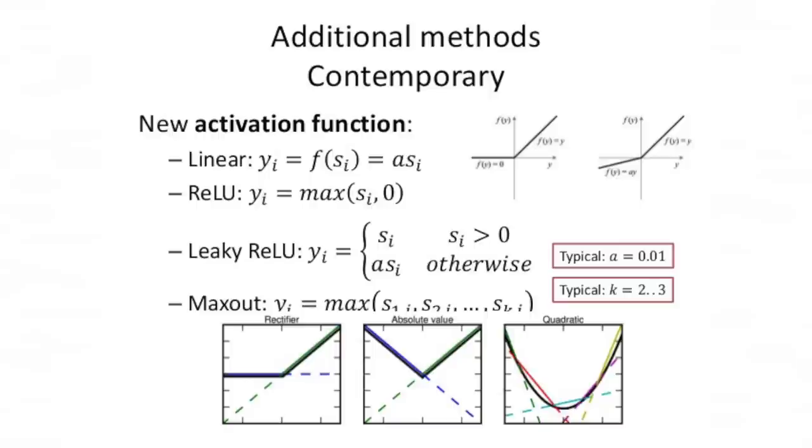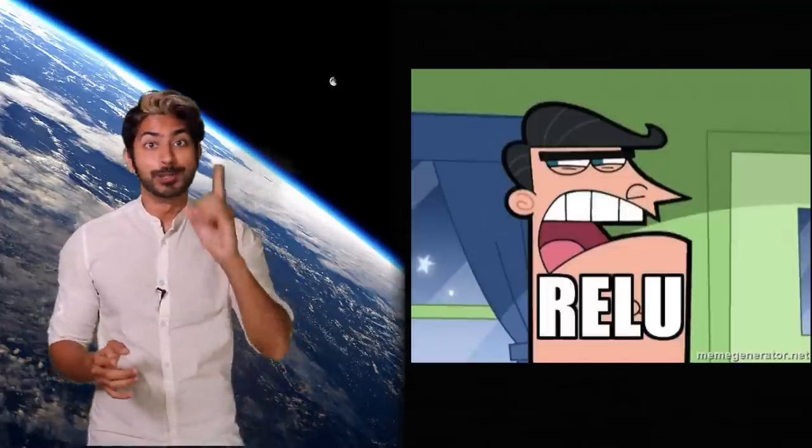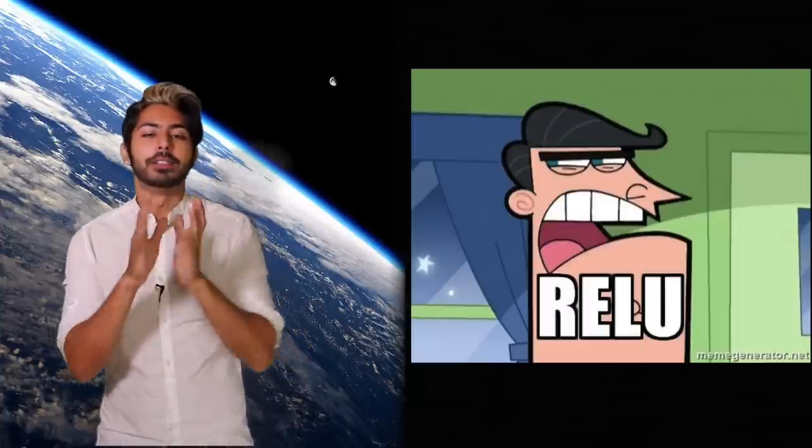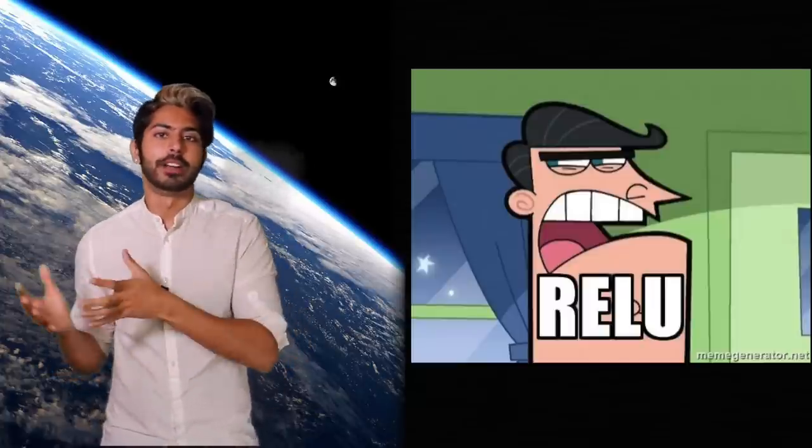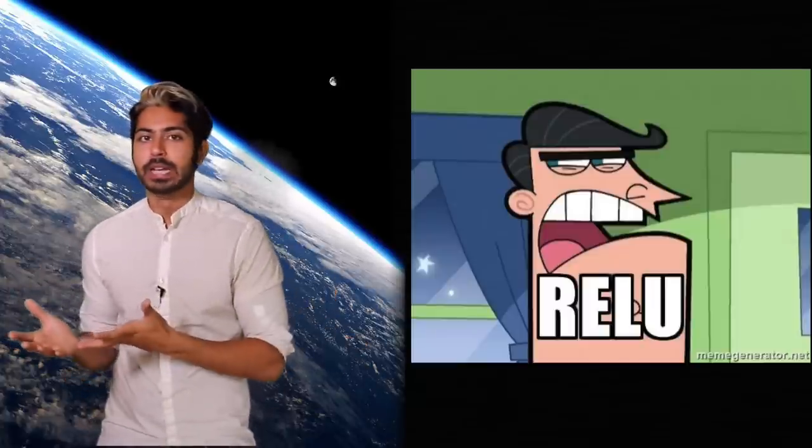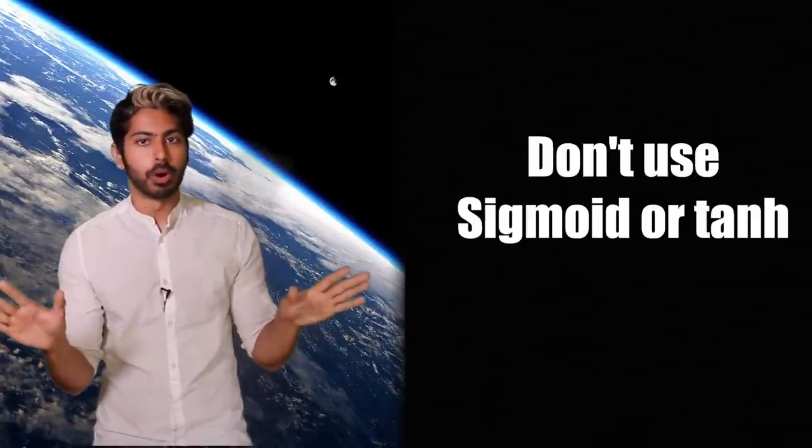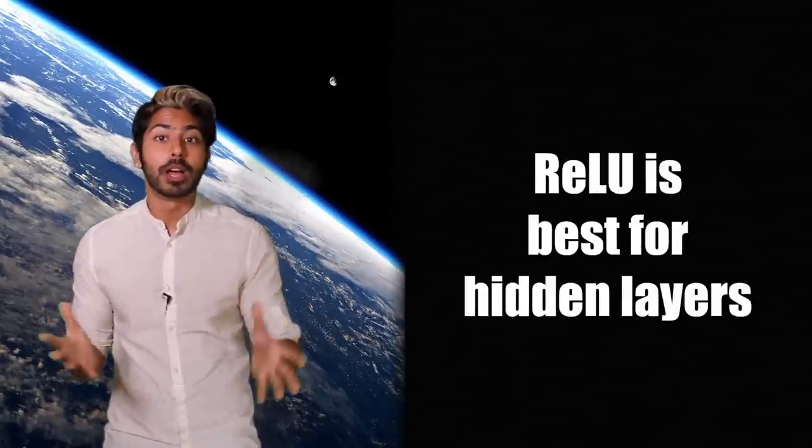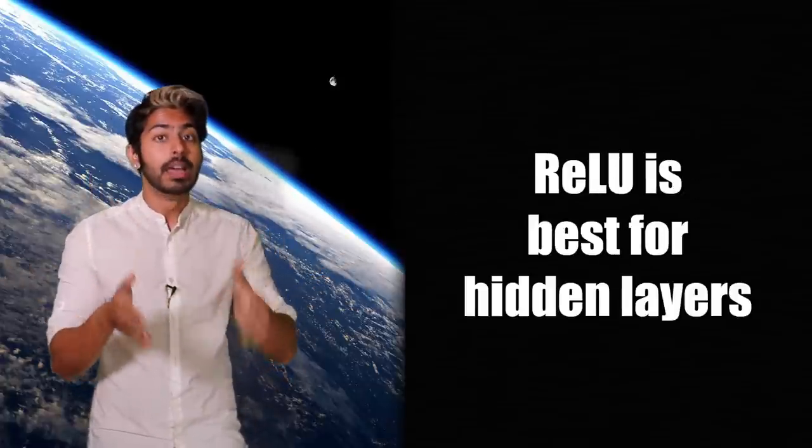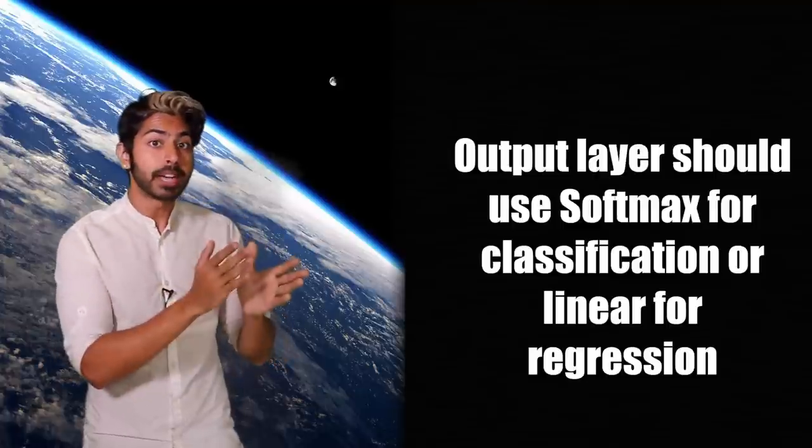The original question was: what type of activation function should you use in a neural network? And the answer is ReLU, ReLU, ReLU, ReLU. But if a lot of your neurons died, then try a variant like a leaky ReLU or maxout. Sigmoid just shouldn't be used anymore, nor should tanh. And although ReLU should be applied to the hidden layers, the output layer should use a softmax for classification or a linear function for regression.